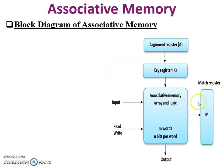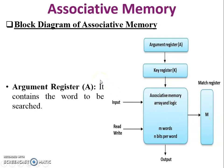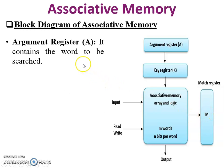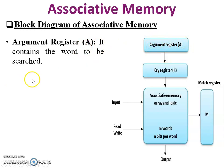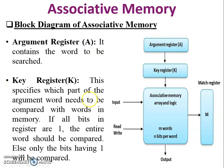Block diagram of associative memory has four parts: one is the argument register, second is the key register, third is the associative memory array, and fourth is the match register. The argument register contains the word to be searched — if you want to search anything inside associative memory, it is stored in the argument register.